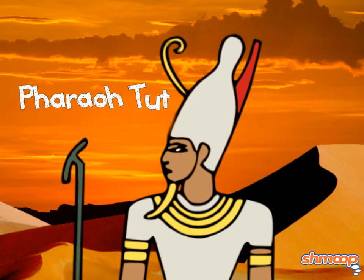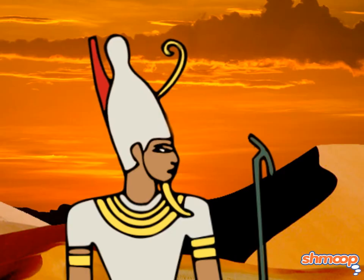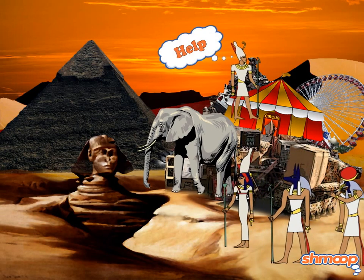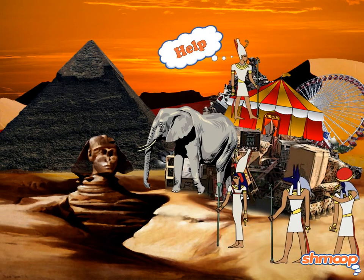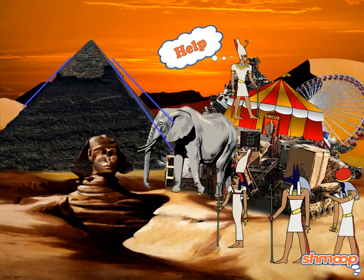Pharaoh Tut is on his way to the hereafter, and he may have overdone it with his list of things to bring to the underworld. Talk about a bucket list. Help him calculate the volume of his pyramid, so he'll know if he's going to have to leave some stuff behind.